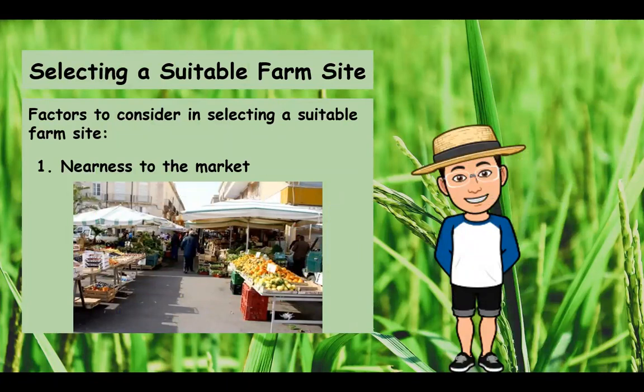After planning a garden, you also need to select a suitable farm site. There are factors to consider when selecting a suitable farm site. Number one is nearness to the market — sites near the market facilitate the disposal of products and ensure profit. Consider the market where products will be sold.